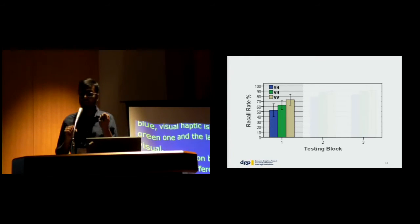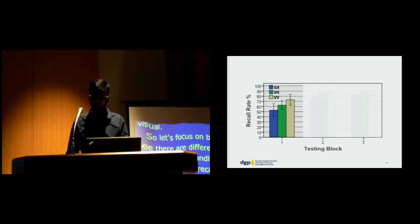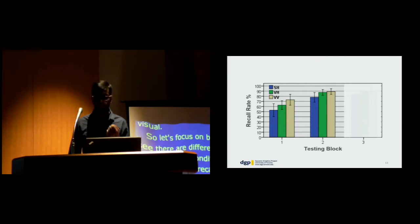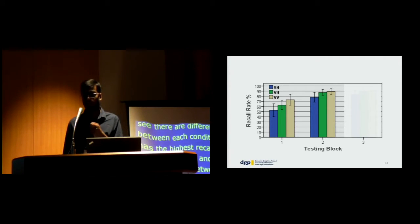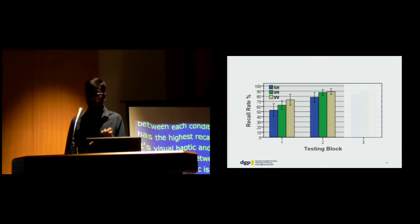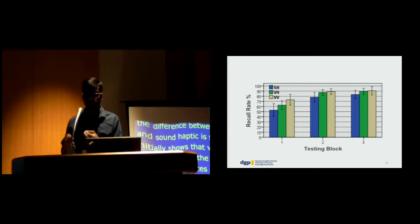It shows that at least initially, visual-visual is better than sound haptic. There's no statistical difference between the other pairs. By the second block, we see that the differences are narrowed, but sound haptic still has statistically less recall than visual-visual. Visual haptic, on the other hand, comes very close to visual-visual. In testing block three, the differences are narrowed even more, and there are no significant differences between these conditions.